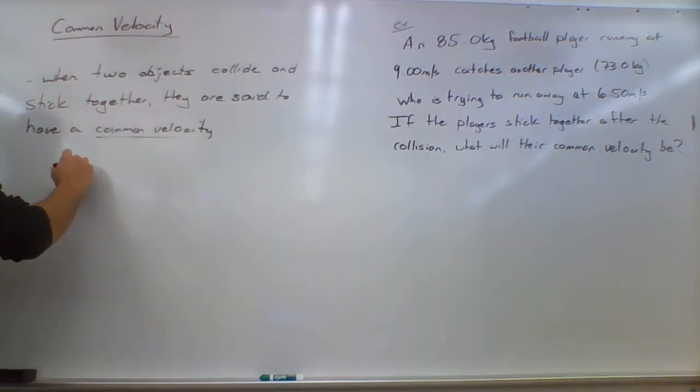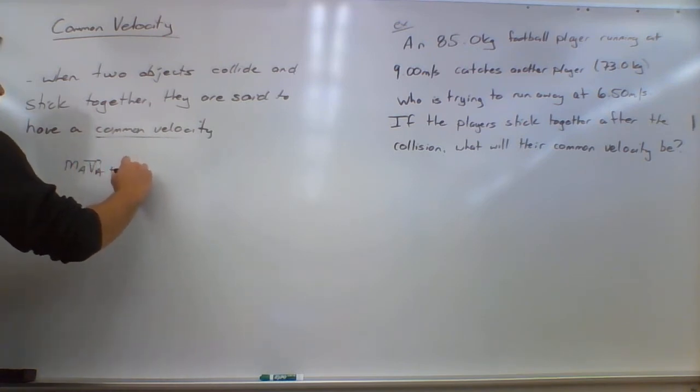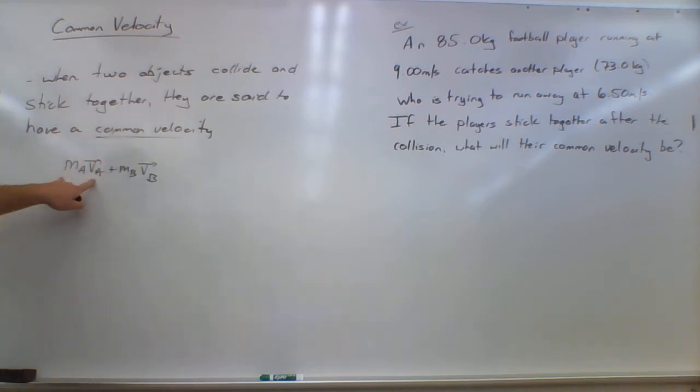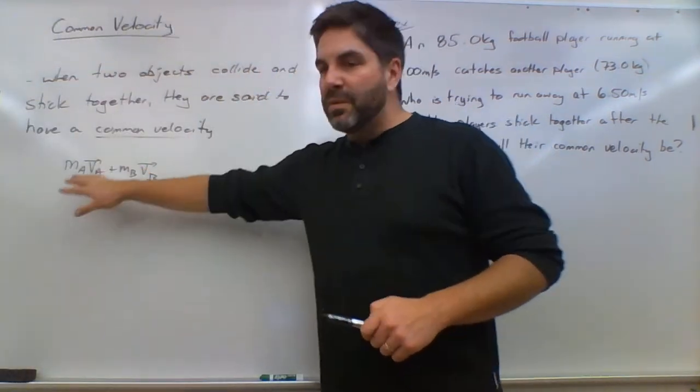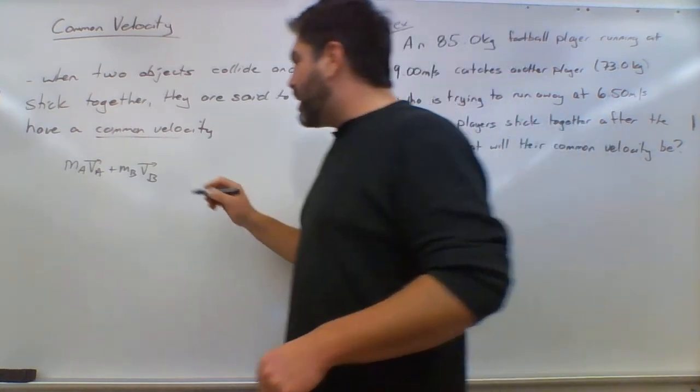We have two separate objects, MA and VA, and MB and VB. So there's momentum for object A, there's momentum for object B. This is before they collide, nothing really different from what we've seen so far.